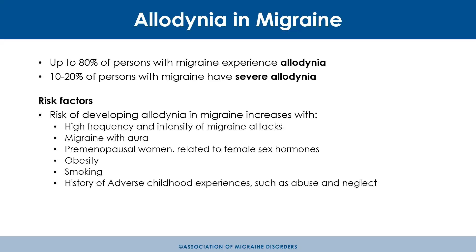Risk factors for developing allodynia include high frequency and high intensity of migraine attacks — worsening attacks increase risk. Allodynia that doesn't resolve after an attack signals worsening migraines. Other risk factors include migraine with aura, premenopausal status with fluctuating estrogen, obesity, smoking, and a history of adverse childhood experiences such as abuse, neglect, parental loss, or prolonged hospitalization — stressors that can predispose a person to both migraine and allodynia.